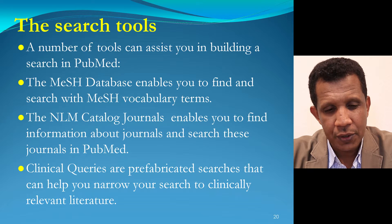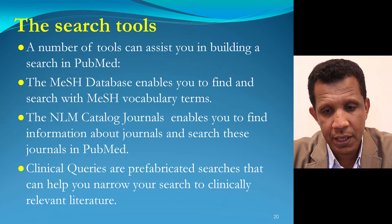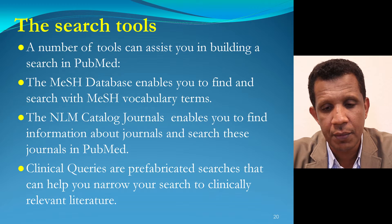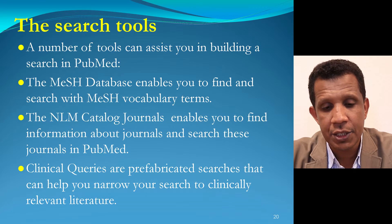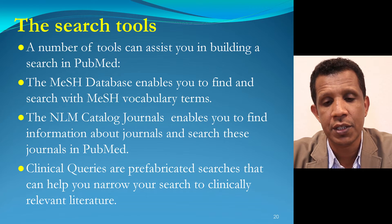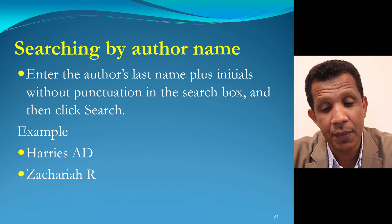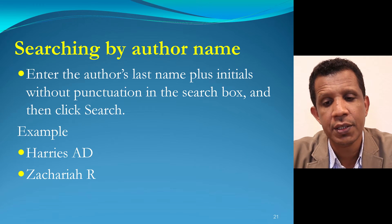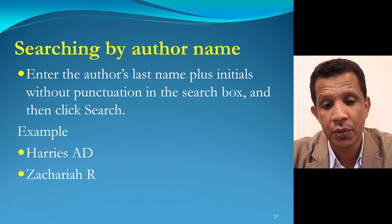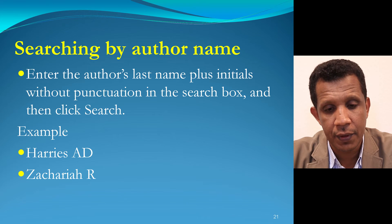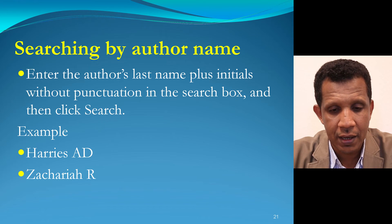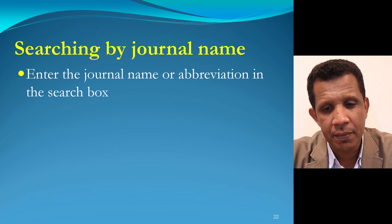There are also additional tools to help you build your search in PubMed. The MeSH database enables you to find and search with MeSH vocabulary terms. The NLM catalog enables you to find information about journals and search them in PubMed. Clinical queries are prefabricated searches that help narrow your search to clinically relevant literature. You can also search PubMed by author name by entering the author's last name plus initials without punctuation — for example, 'Harris E' or 'Zakaria R' — or search by journal name by entering the journal name or abbreviation in the search box.